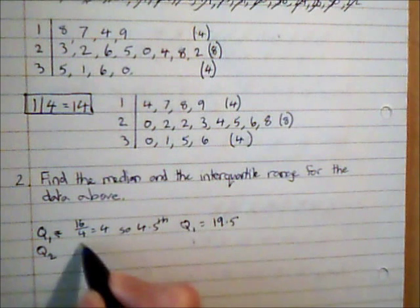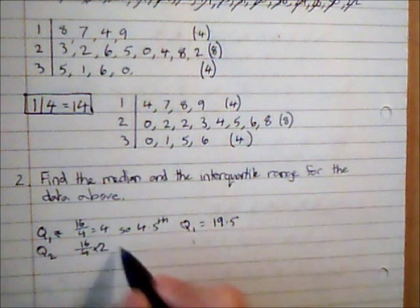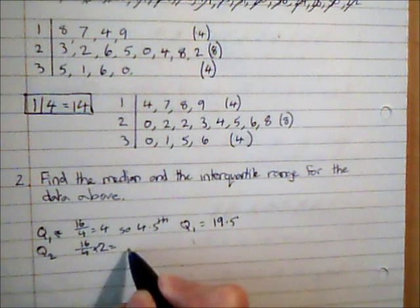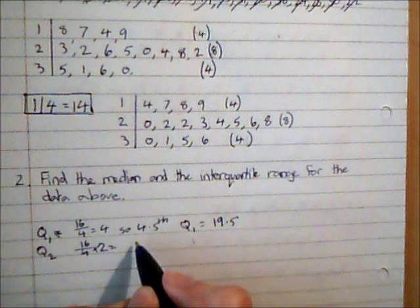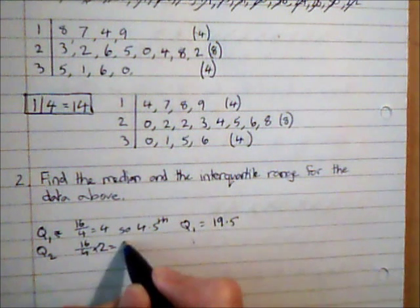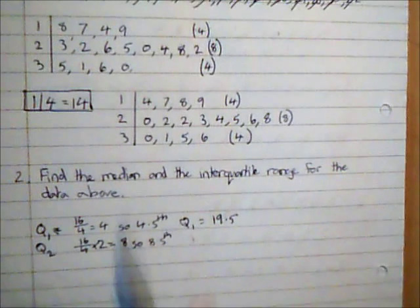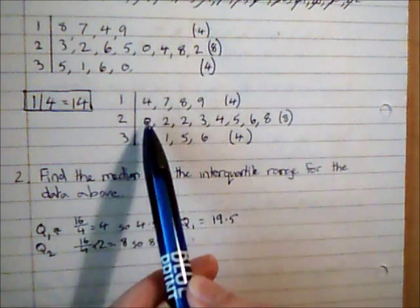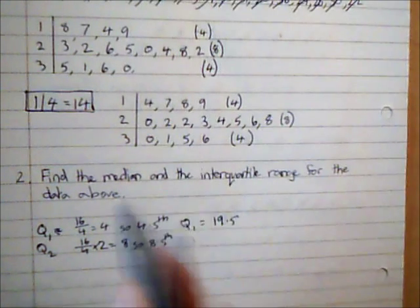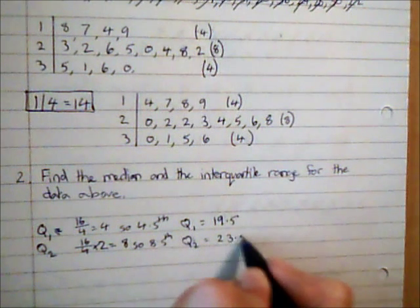Q2 is a similar process. So 16 over 4 times 2 at this time because I want the median. So that's going to give me here 8. So I want the 8.5th value, so it's between the 8th and the 9th. So 1, 2, 3, 4, 5, 6, 7, 8, 9. So between 23 and 24. So 23.5.